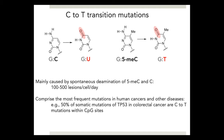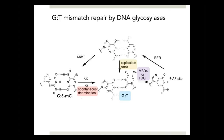This deamination generates uracil and thymine opposite guanine. These mutagenic base pairs are repaired by the mismatch repair pathway, as well as DNA glycosylases such as MBD4 or TDG. GT mismatch can also occur through replication error or during active demethylation. When a GT mismatch occurs, MBD4 or TDG can process these mismatches to generate an abasic site opposite guanine, which is further processed by the base excision repair pathway.